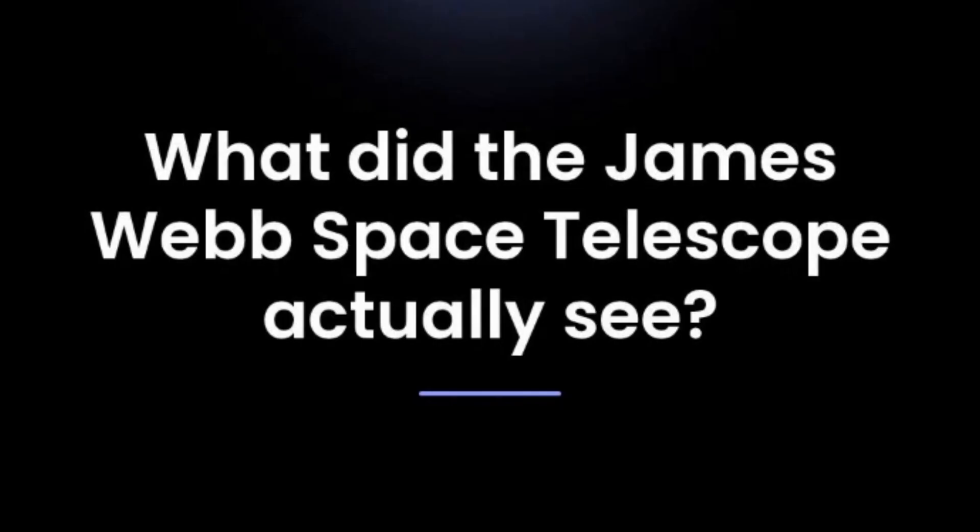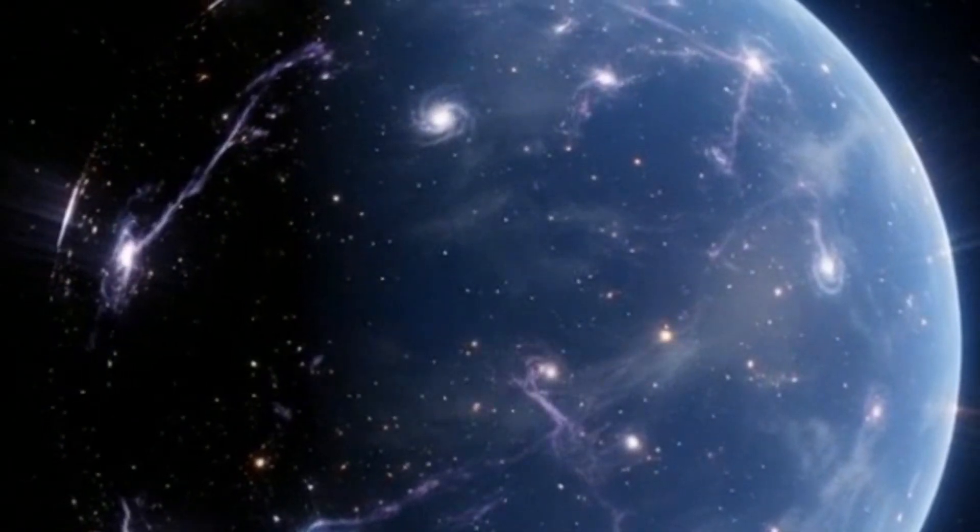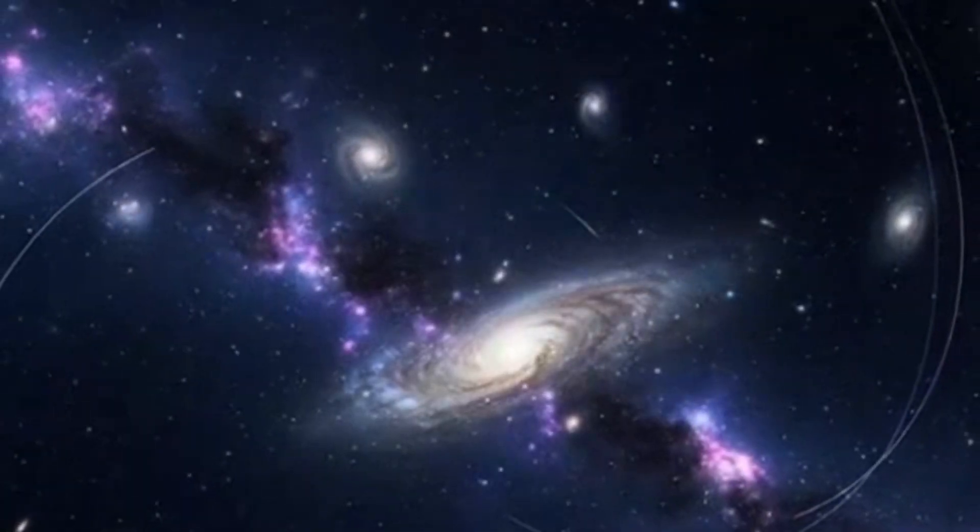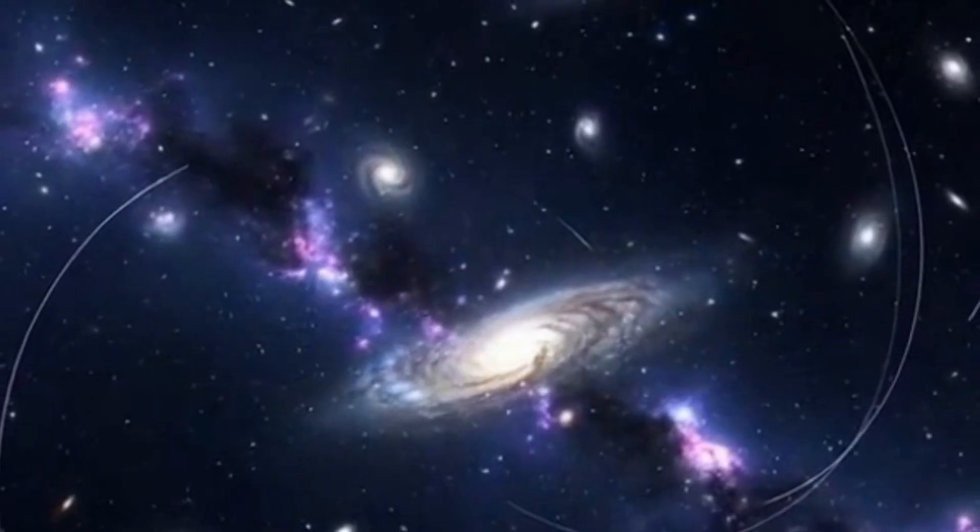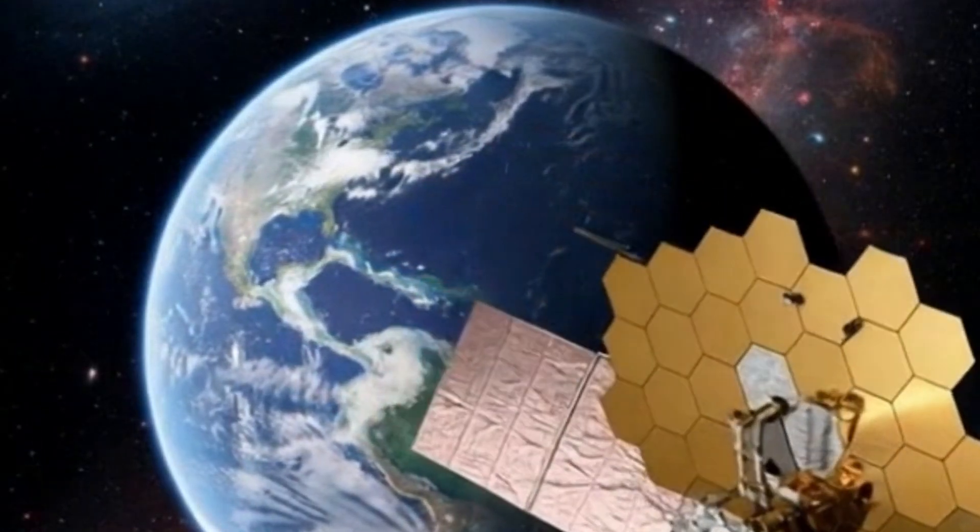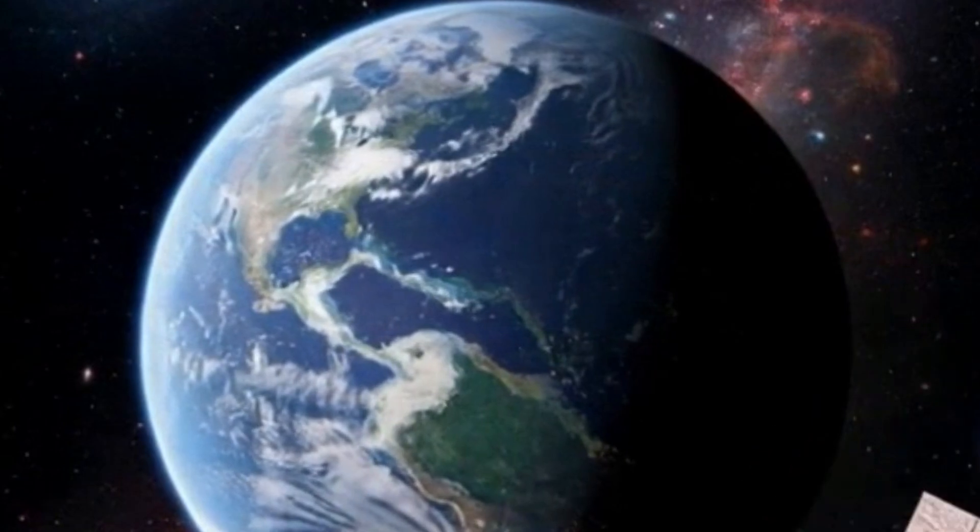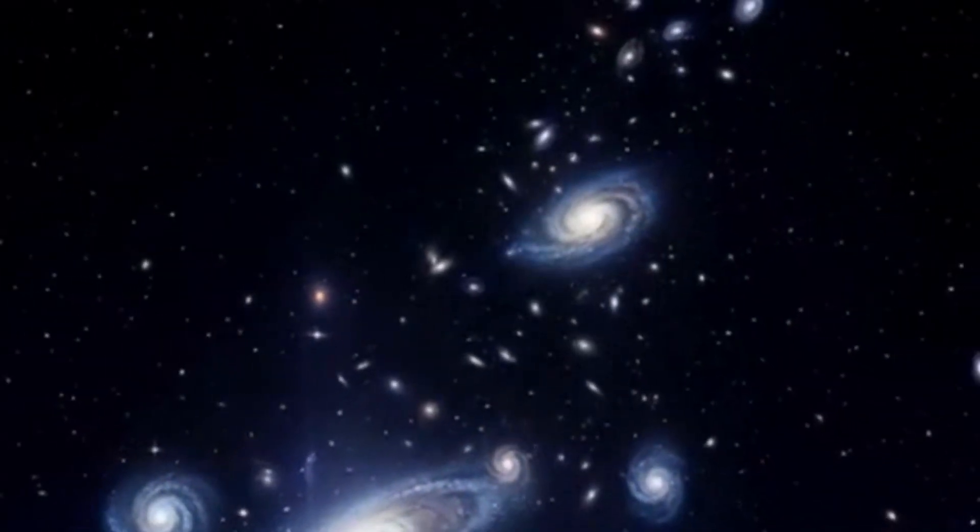So what did the James Webb Space Telescope really see at the edge of the observable universe? And why are these findings forcing scientists to rethink everything we thought we knew? To answer that, we have to return to one of the most profound discoveries of the 20th century. In 1929, Edwin Hubble revealed that galaxies are moving away from each other, that the universe itself is expanding.